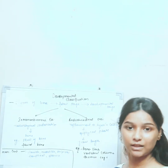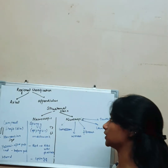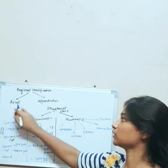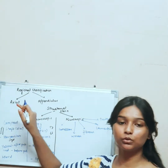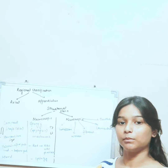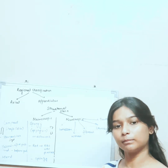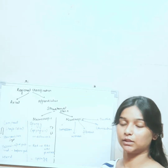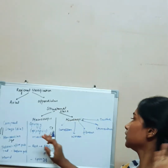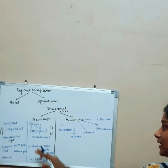Now we are moving to our third category: regional classification. Regional classification is the simplest type of classification because we have only two regions — the axial region and the appendicular region. Above the pelvic girdle, everything comes under the axial region, and below the pelvic girdle, everything comes under the appendicular region.